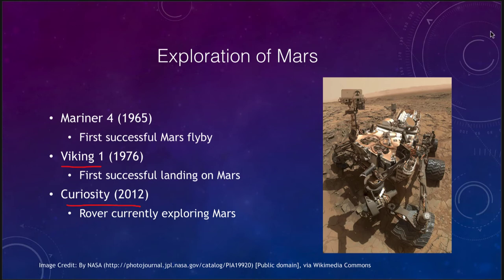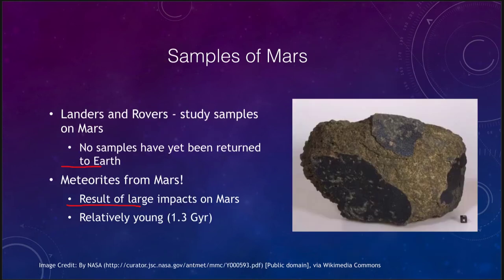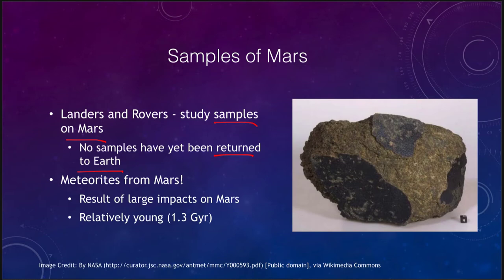What kind of samples of Mars can we explore? We actually do have some samples of Mars here on Earth. Certainly landers and rovers have been able to study samples on Mars, but we have not yet had any samples returned to Earth — we have not yet sent a craft that went to Mars, picked up samples, and brought them back to Earth to study in the laboratory. However, we do have meteorites from Mars, and there are meteorites here on Earth that show features relating them to being from Mars.